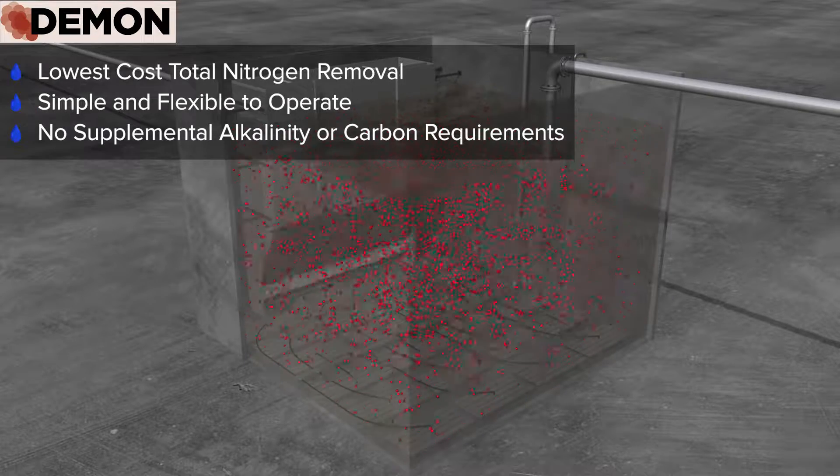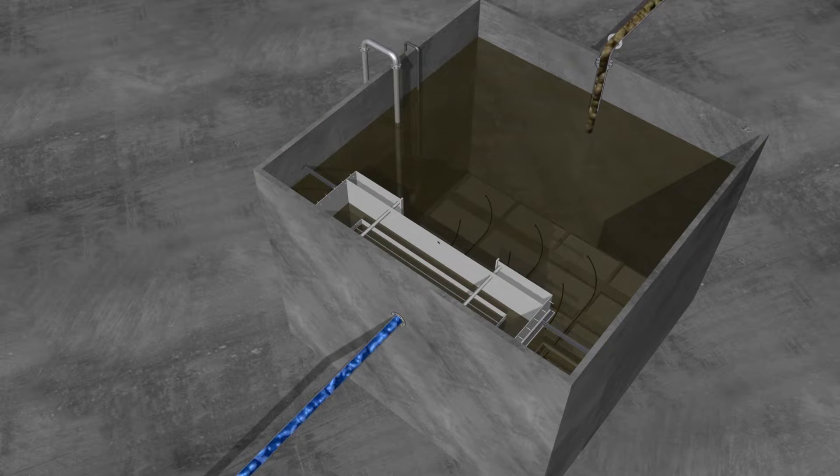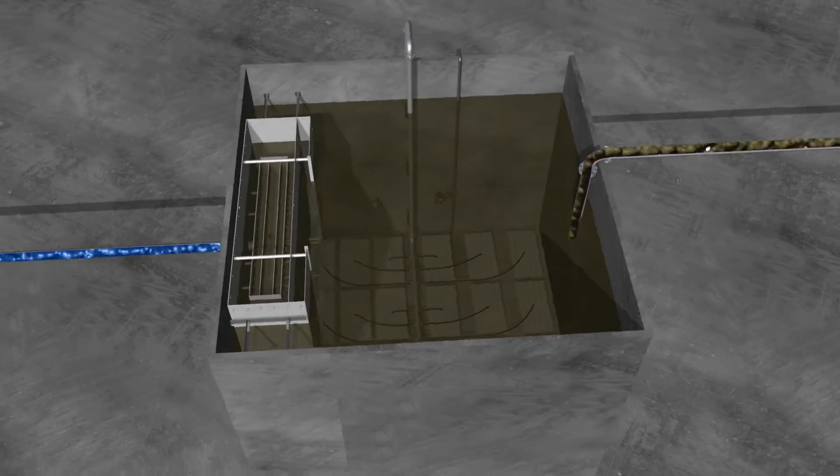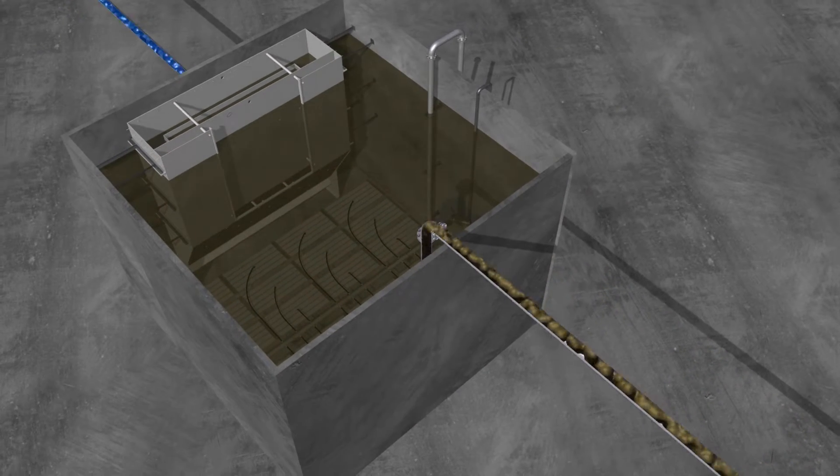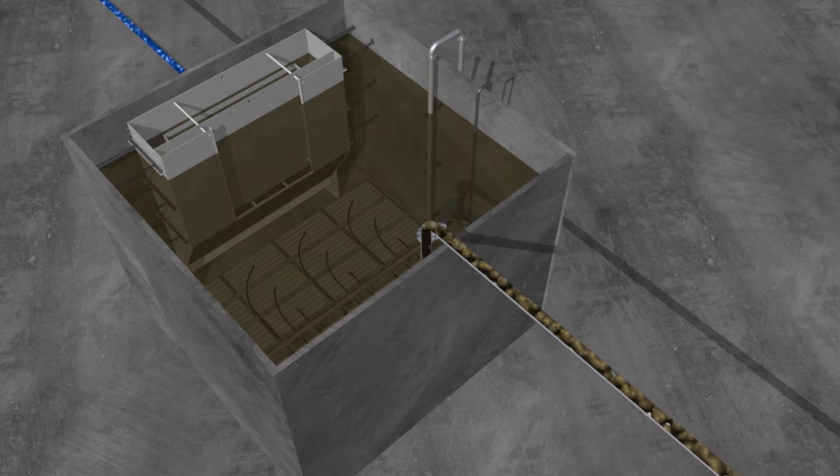Shown here in continuous mode, Demon is a 100% flow-through process, meaning the flow rate of the reactor effluent is the same as the influent. While in this mode, the water will enter the reactor and